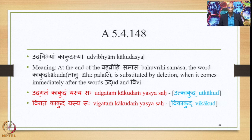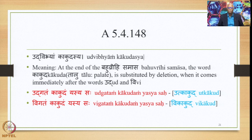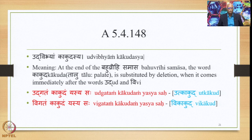Let us go to 5.4.148, which is Udvibhyam Kakudasya. The meaning is: at the end of the Bahuvrihi Samasa, the word Kakuda — which here means talu or palate — is substituted by deletion when it comes immediately after the words Ud as well as Vi. So Udgatam Kakudam Yasya Sah gives the form Udkakut, and Vigatam Kakudam Yasya Sah gives the finally derived compound output Vikakut. Udvibhyam Kakudasya.